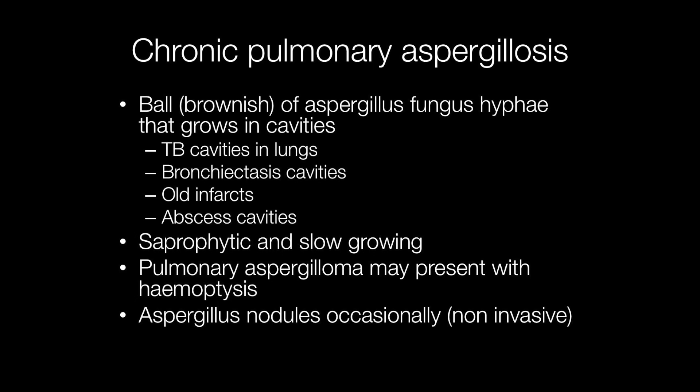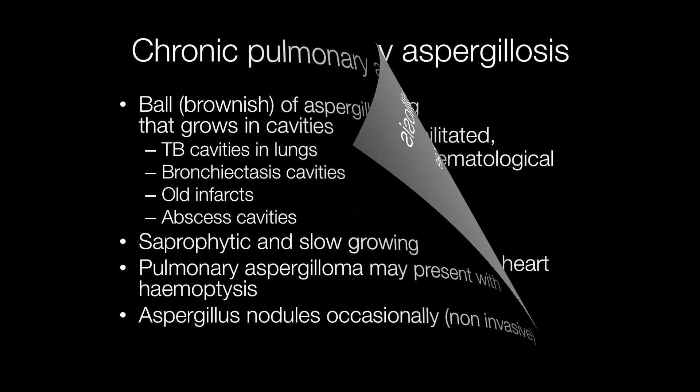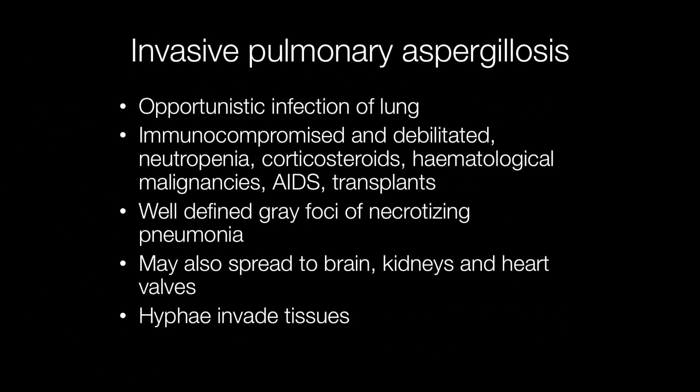Sometimes Aspergillus forms nodules that are non-invasive. The most severe type of Aspergillus infection is invasive pulmonary aspergillosis, an opportunistic infection of the lung occurring in immunocompromised and debilitated patients, especially those who are neutropenic. Corticosteroids, haematological malignancies, AIDS, and transplant recipients are also at risk.